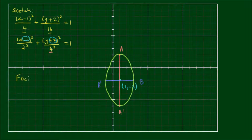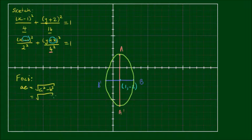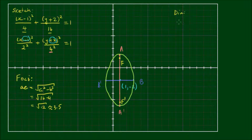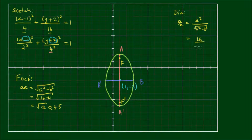The focal points are again at a distance of a times e away from the center, given by the square root of a squared minus b squared, which equals the square root of 16 minus 4, which equals the square root of 12, approximately equal to 3.5. On the major axis at a distance of 3.5 above the center we have focus f, and similarly 3.5 units below the center we have focal point f prime. For the directrices, these are again at a distance a over e, equal to a squared divided by the square root of a squared minus b squared, which is 16 divided by root 12, approximately equal to 4.6.